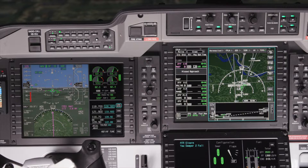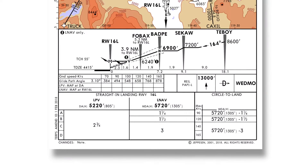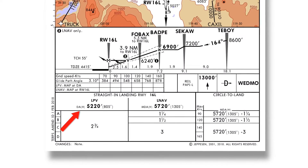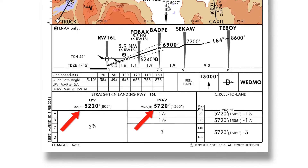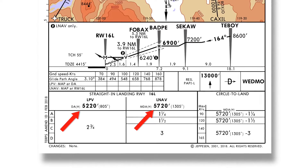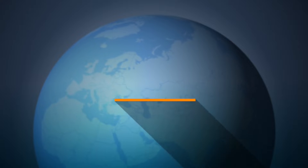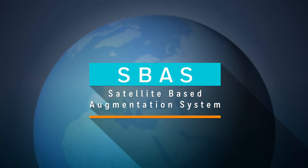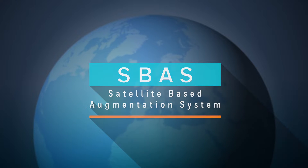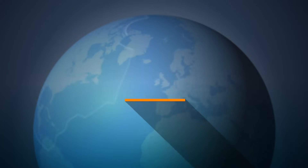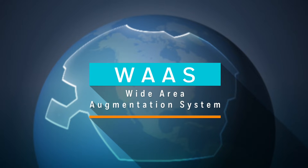LPV stands for Localizer Performance with Vertical Guidance. LPV is a category of approach minimums for RNAV approaches that are typically lower than LNAV or LNAV-VNAV minimums. RNAV approaches with LPV minimums are built on the Satellite-Based Augmentation System, or SBAS. In the United States and Canada, this system is known as the Wide Area Augmentation System, or WAAS.